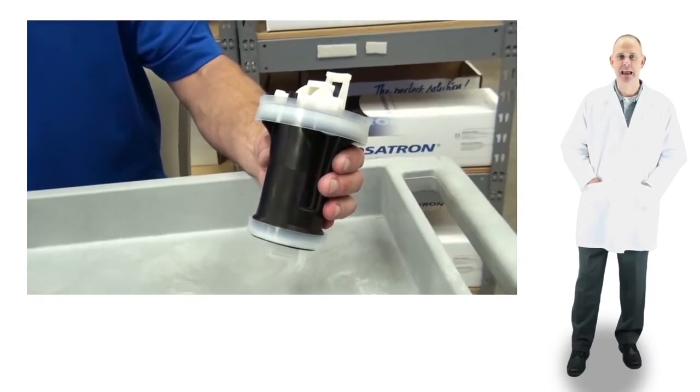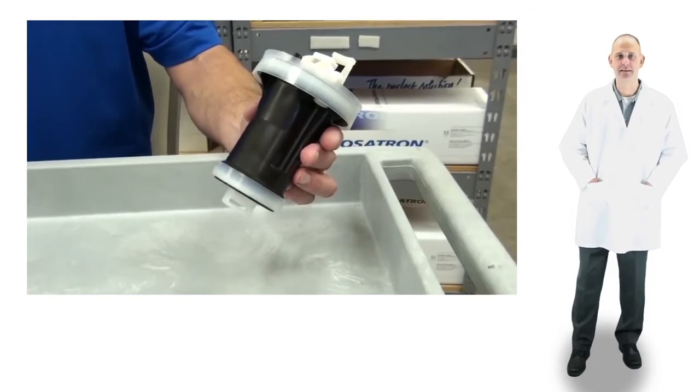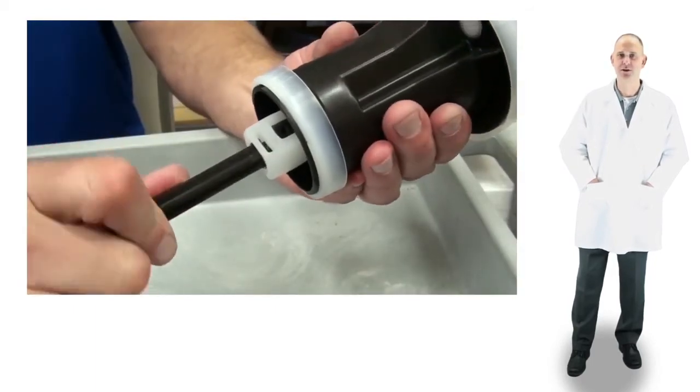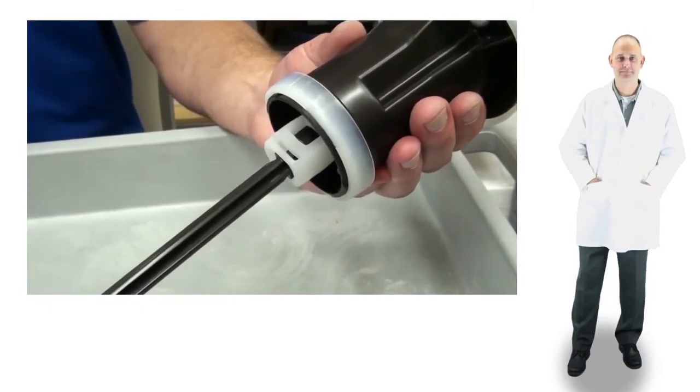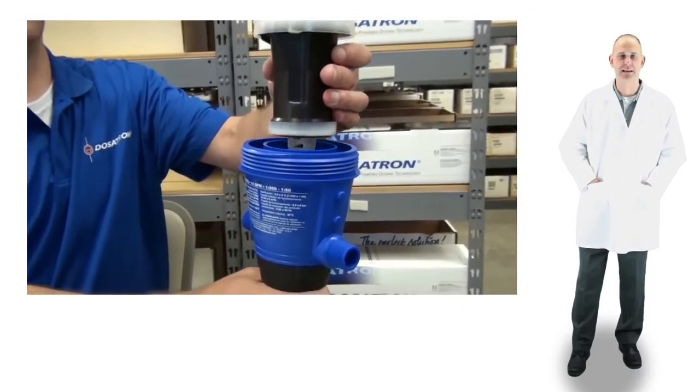If anything is damaged or missing, replace the parts. Reinstall the plunger by aligning the top with the retainer. Press it in and turn a quarter turn clockwise to lock. Place the piston back into the body and reinstall the blue bell housing hand tight.